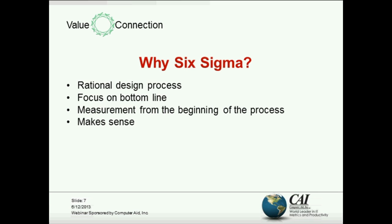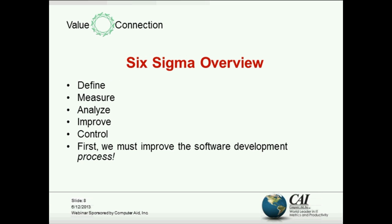So if we have good numbers for our software development process, we can certainly apply this technique to the process. And of course we have measurement. So here's our basic algorithm called DMAIC. DMAIC represents a rational approach to solving a problem — in fact, the approach will work with just about any problem that merits this level of attention.